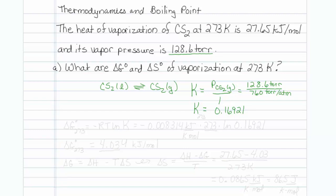If you have K, you have delta G. So K at 273 is this value. That means the free energy at this value has got to be equal to minus RT natural log of K. So that would be equal to minus 0.008314 kilojoules per Kelvin mole times 273 times the natural log of 0.16921.